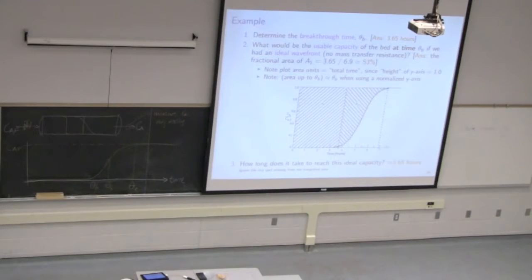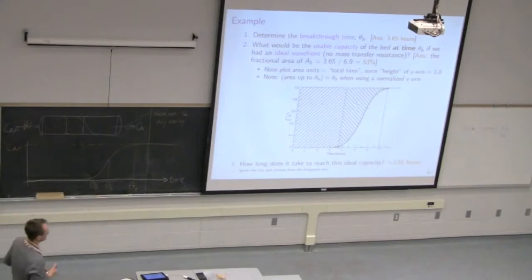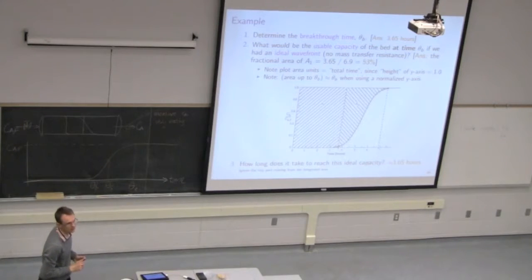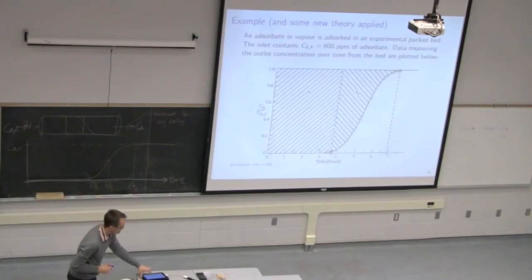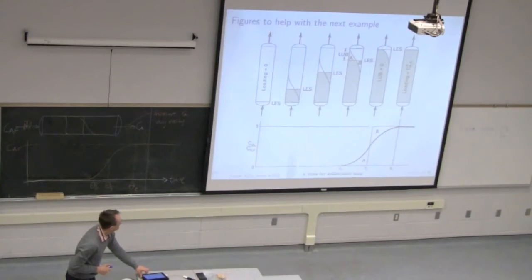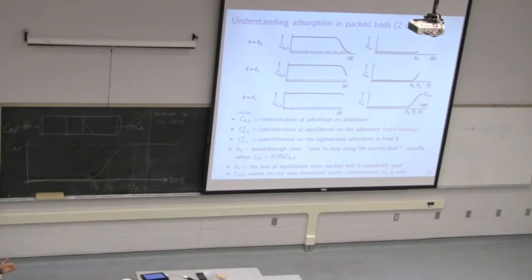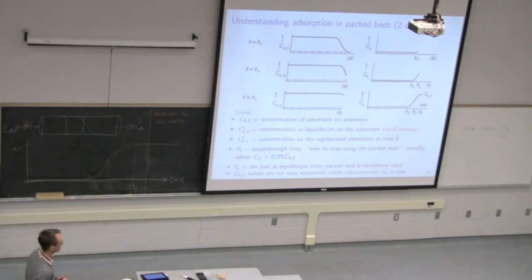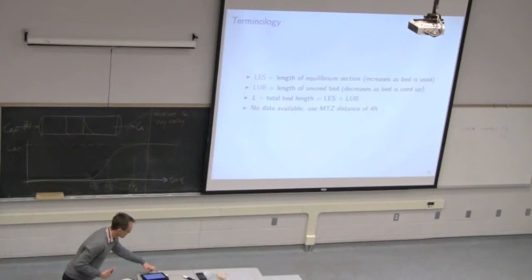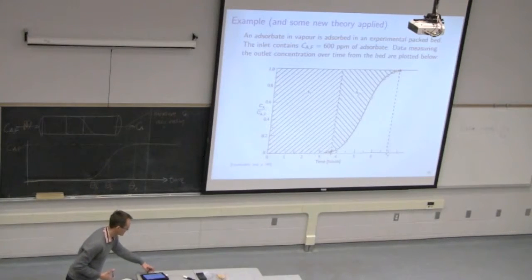A student asks: are there two different shapes — essentially the same but reflected? The instructor explains: there are two different views. One is looking at the fluid leaving and the other is looking at the solid adsorbed. The S-shaped curves are on the right-hand side and the Z-shaped curves are on the left — they're looking at different aspects, but they're a reflection of the same concept. That's CAS and CA respectively.